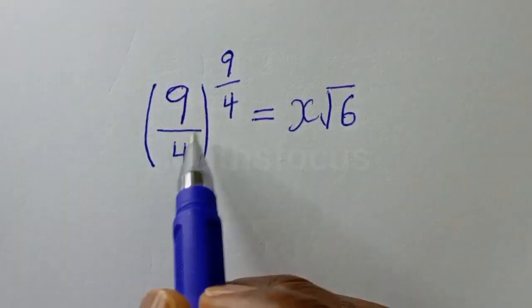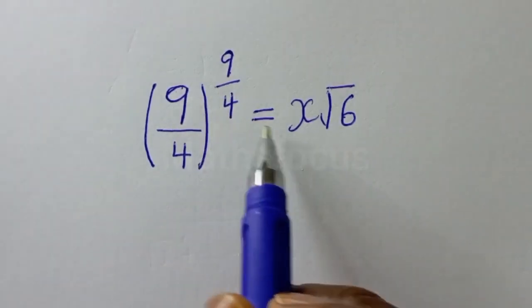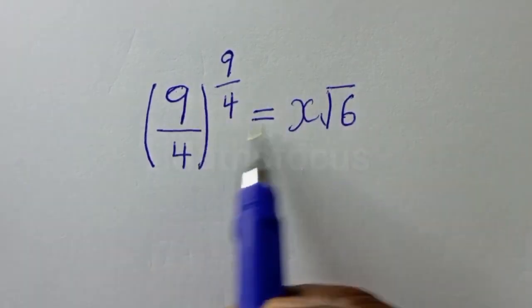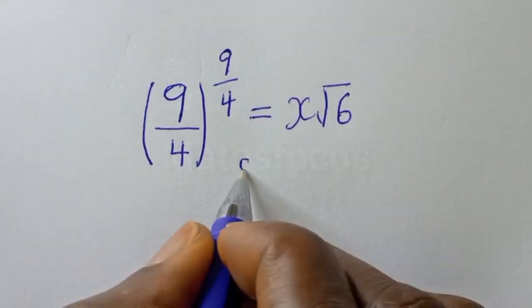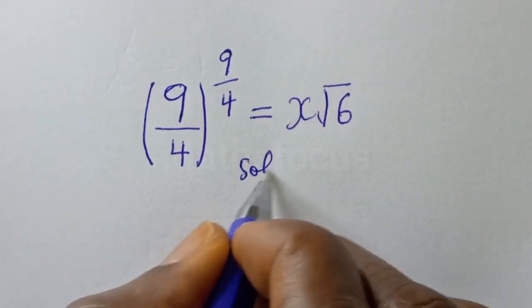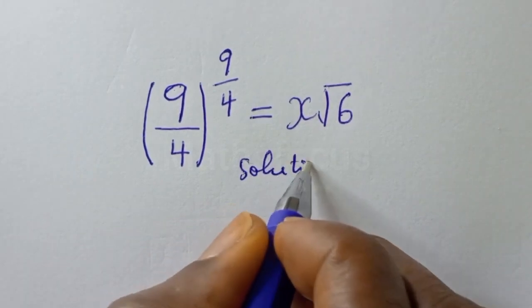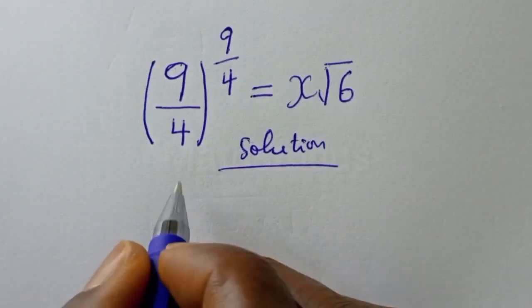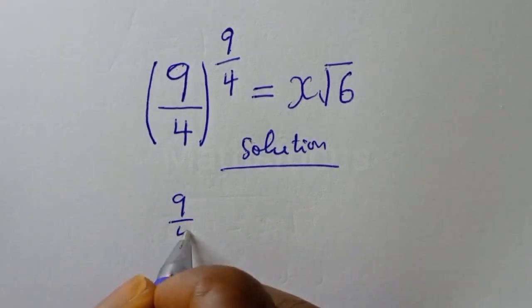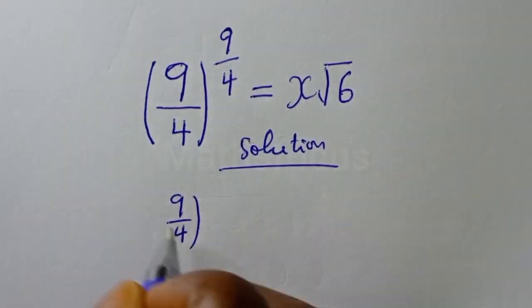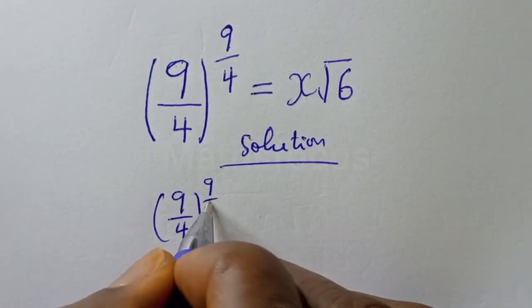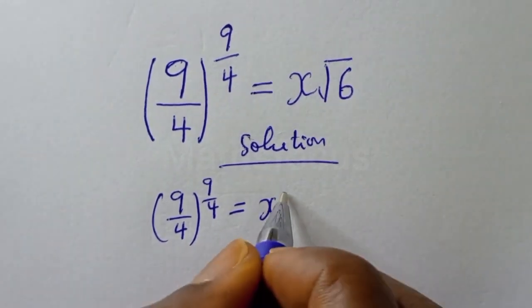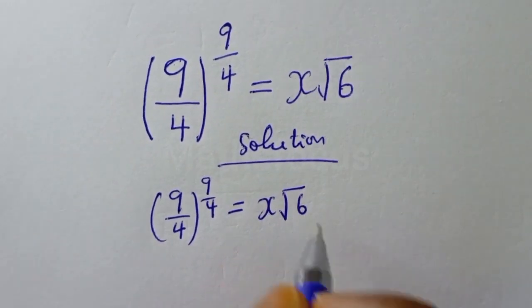9 over 4 to the power of 9 over 4 is equal to s square root of 6. Find the value of s from this given equation.